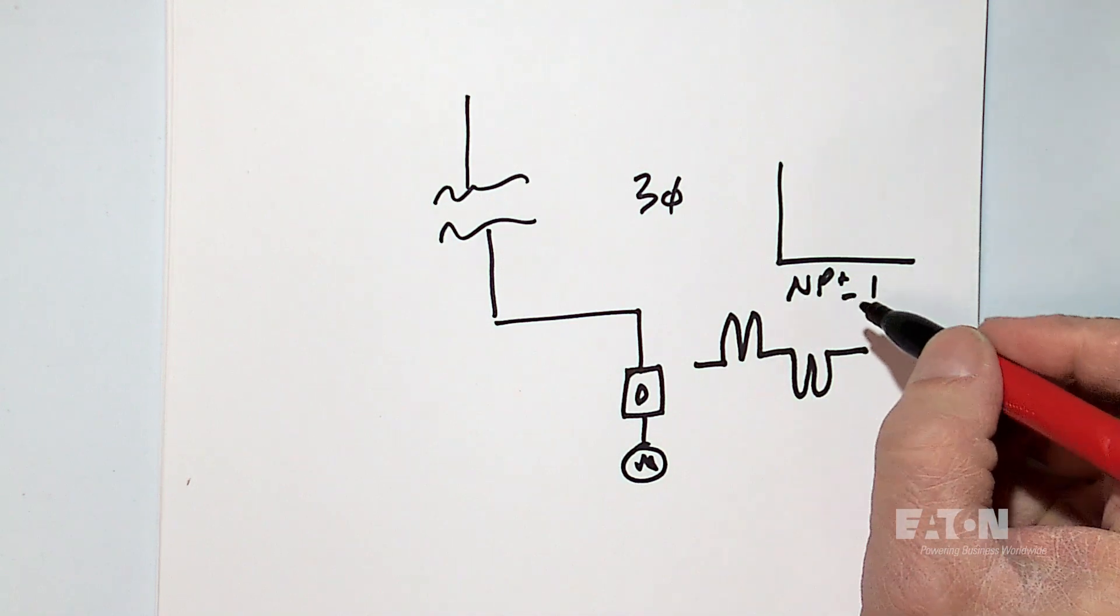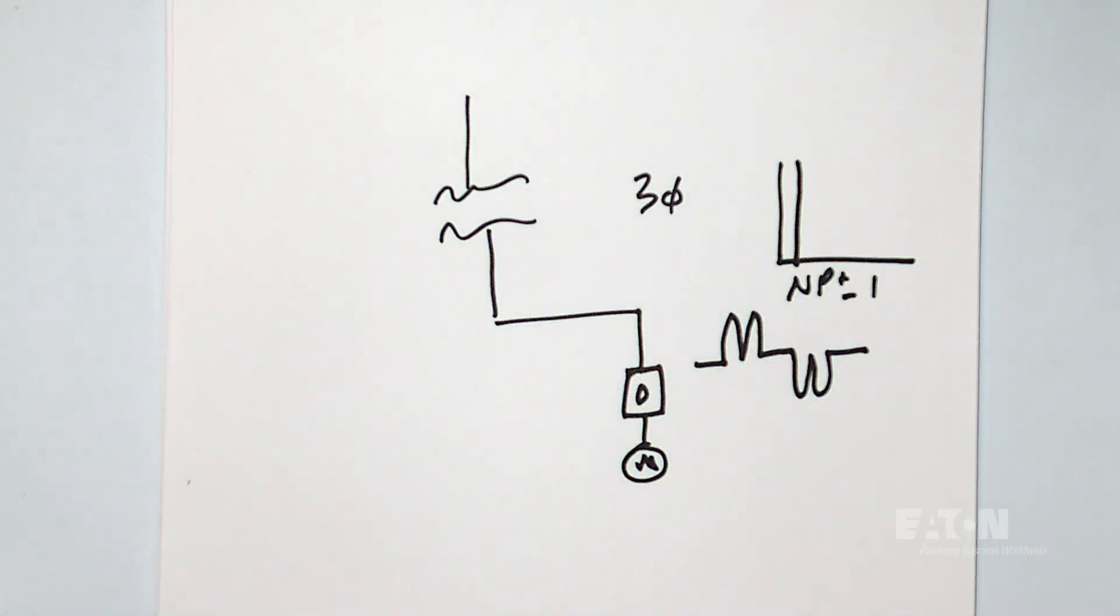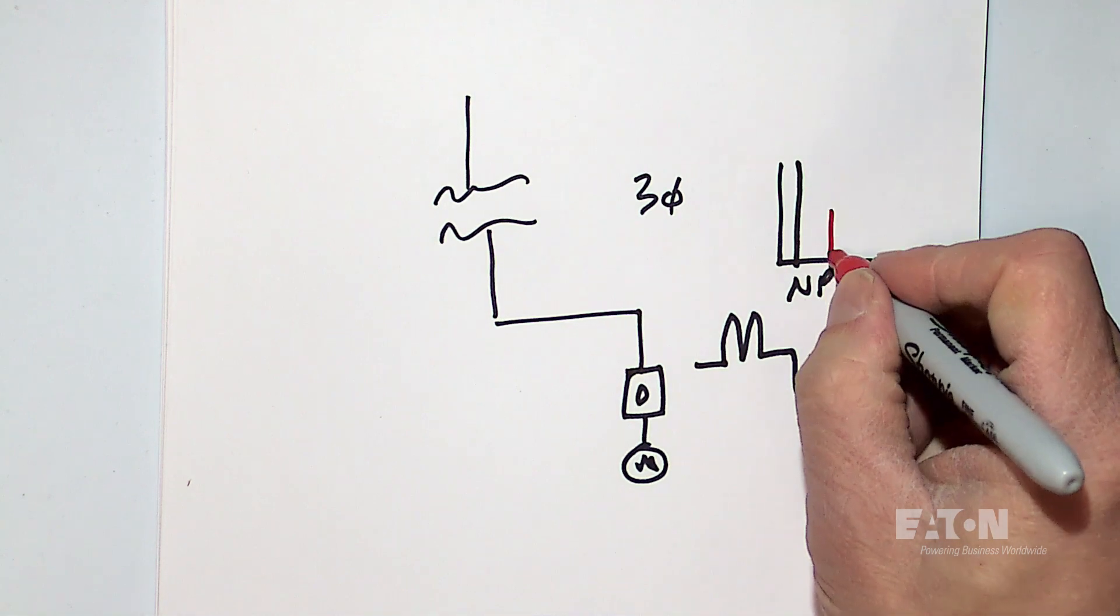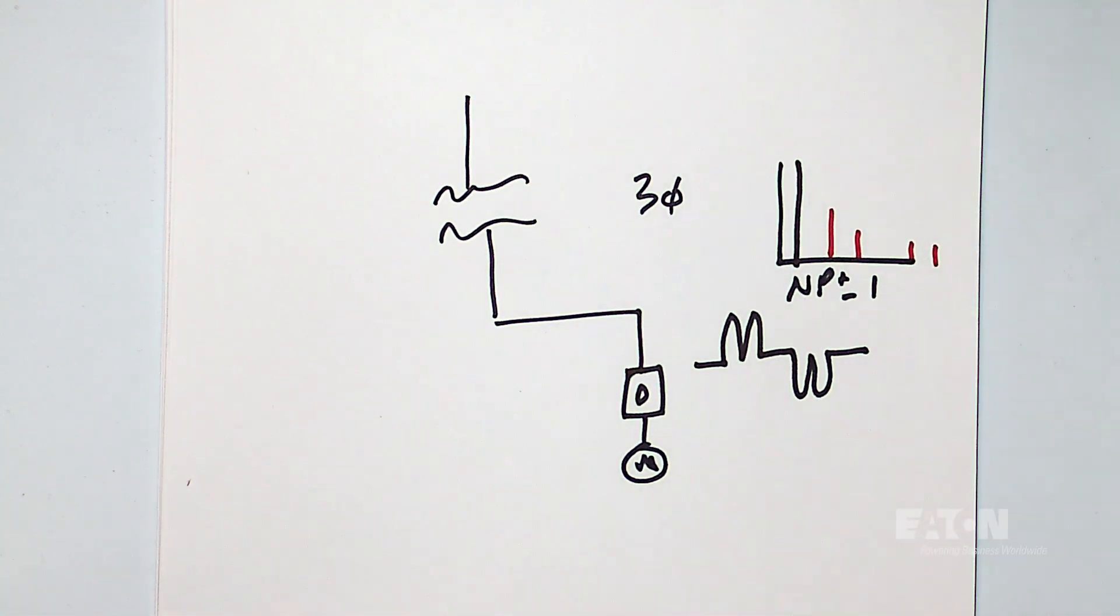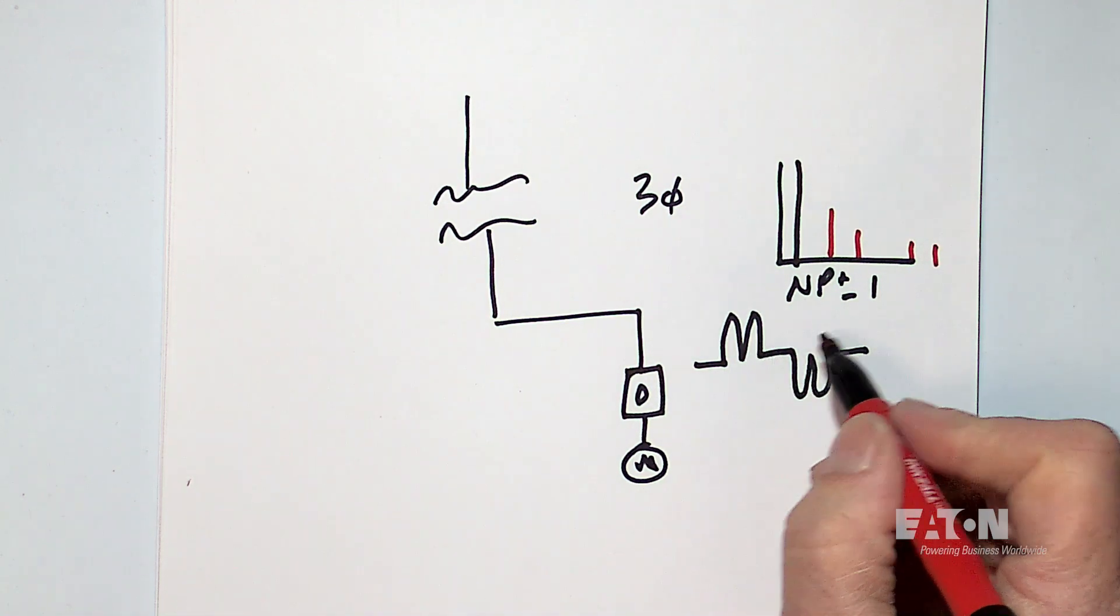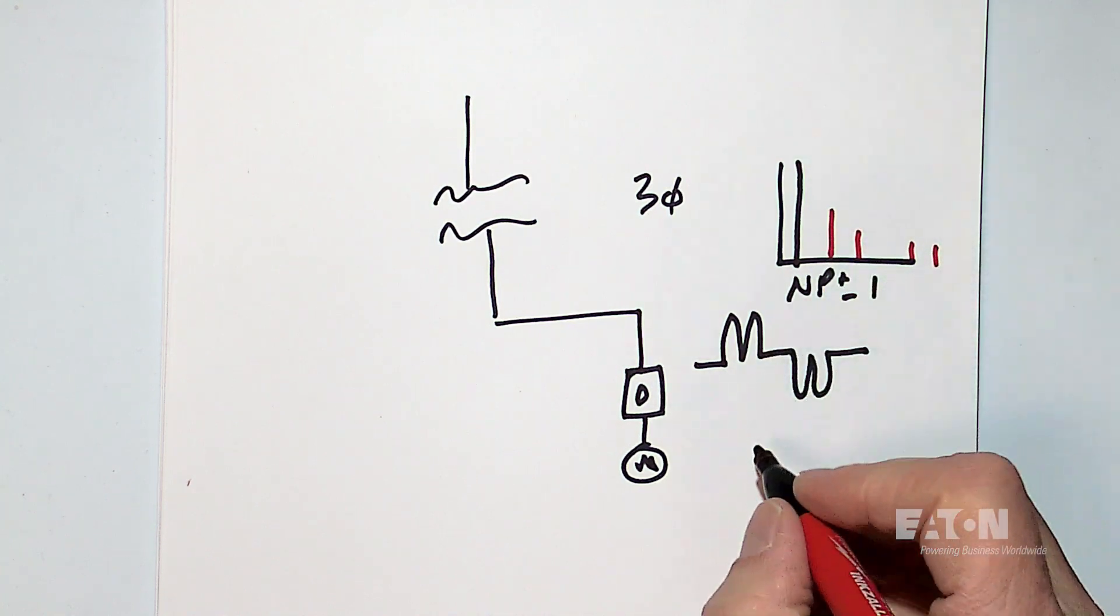So I have 60 hertz, then I have fifth harmonic, seventh harmonic, eleventh harmonic and thirteenth harmonic. That's pretty characteristic. The shape of these waveforms and the magnitude of this corresponds.